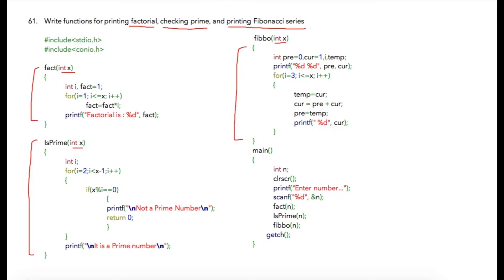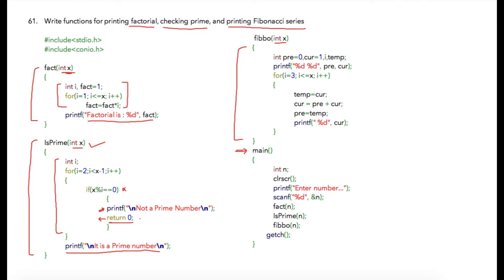To perform factorial, check whether a number is prime, and generate Fibonacci series, I have written three functions which can be utilized whenever required. All three functions take a single input parameter and perform their individual operations. The first function finds the factorial and simply prints it using the value of 'x' passed from main. The second function, 'is_prime', uses the same parameter to find whether the number is prime. If it is prime, it prints that it is a prime number; otherwise it prints that the number is not prime.